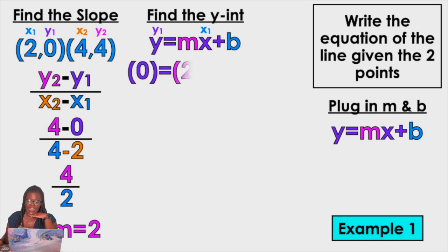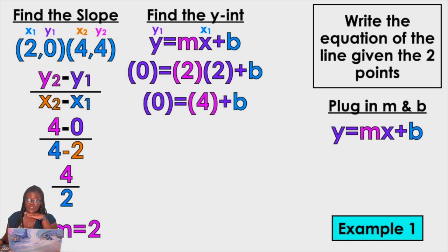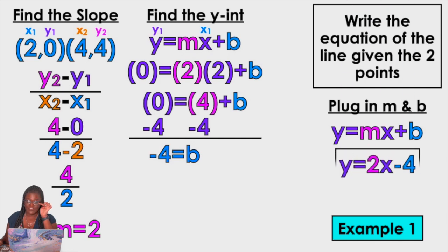I'm going to take that 2 and put it into the formula. I'm also going to take X1 and Y1 and put them in. Look at the blue point — 2 comma 0. Y1 I put in for Y. M equals 2. X, I put in X1 which is another 2, but the blue 2, not the pink 2. Now I'm going to solve for B. Multiply 2 times 2 — that's 4. Get rid of the 4. Negative 4 equals B. Take M and B — that's my final answer: Y equals 2X minus 4.